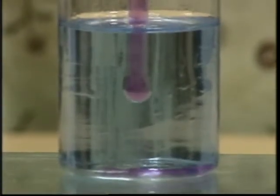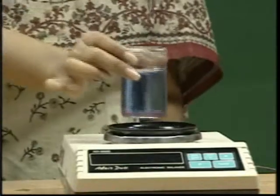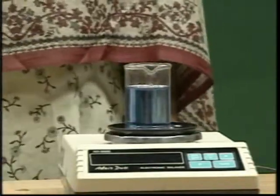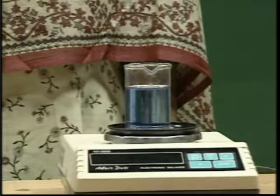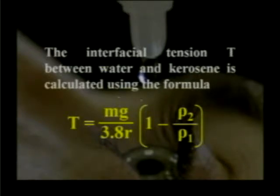The flow of water is regulated so that drops of water detach themselves into the kerosene one by one. You collect 30 drops of water inside the liquid, then find the mass of the beaker plus 30 drops of water. From this, you find the mass of one drop. The interfacial surface tension T between water and kerosene is calculated using the formula: T = mg / (3.8r × (1 − ρ2/ρ1)).